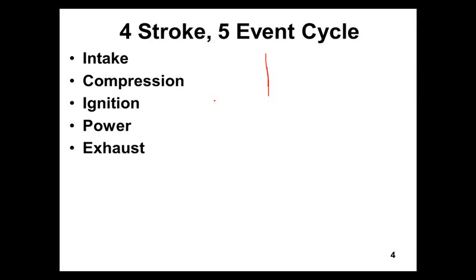One problem with burning gasoline or diesel is that both fuels are made from hydrogen, carbon, and nitrogen — hydrocarbons. When you burn gasoline, oxygen bonds to hydrogen and you get water, which is not a problem. But some carbon bonds with oxygen producing carbon monoxide and carbon dioxide. Carbon monoxide in airplane cabins is dangerous: it replaces oxygen on your blood vessels, so you can breathe but the oxygen doesn't bind to your blood, and you pass out and die.